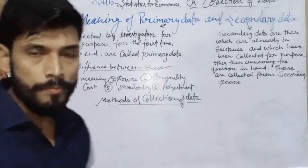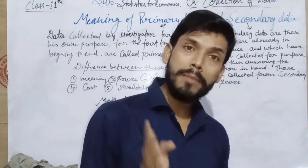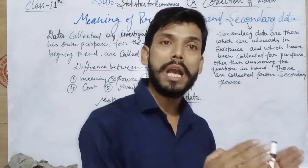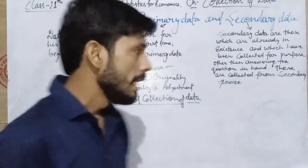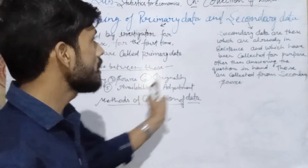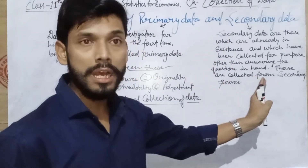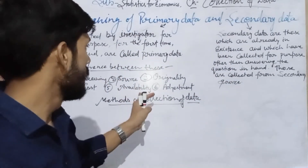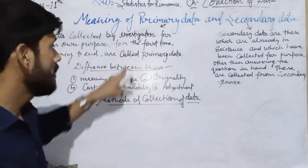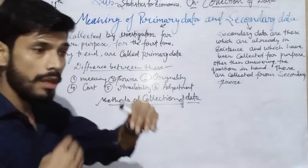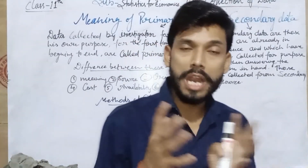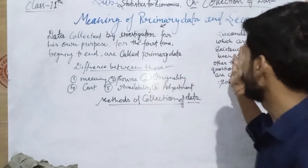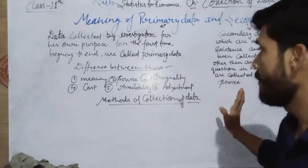Fourth: cost. In primary data, more cost, more efforts, and more time are involved. In the collection of secondary data, there is less time and fewer efforts involved. Now, availability: primary data has an availability problem — it is not easily available and we have to find it out. But secondary data is already available.